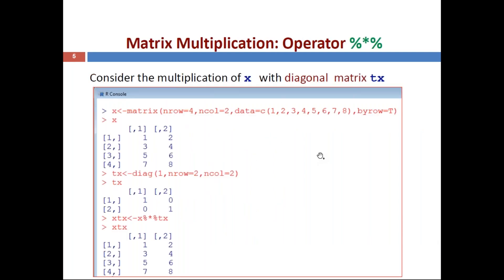For matrix-matrix multiplication, this can be implemented using the operator %*% (percentage asterisk percentage). This symbol is used for multiplication of matrices. The multiplication must satisfy a particular condition: if the first matrix has order m×n, the second matrix order should be n×p. The number of columns in the first matrix must equal the number of rows in the second matrix.